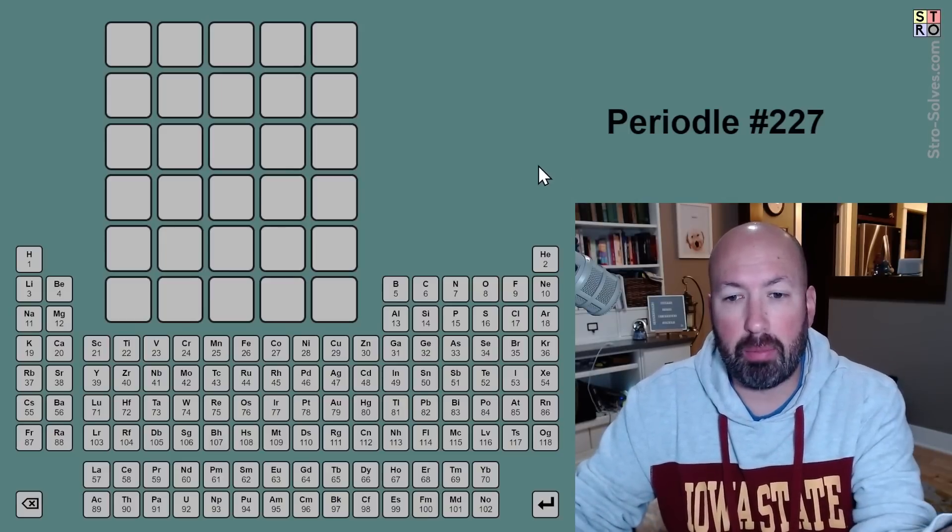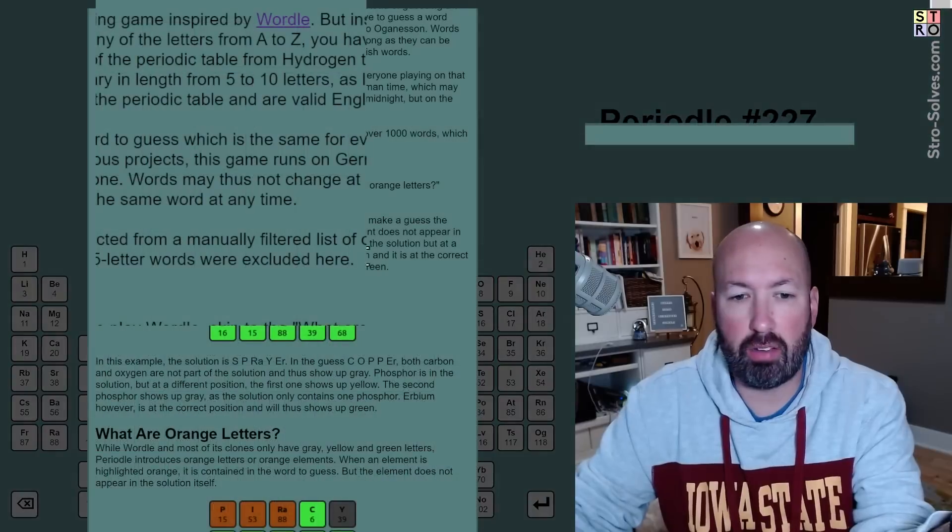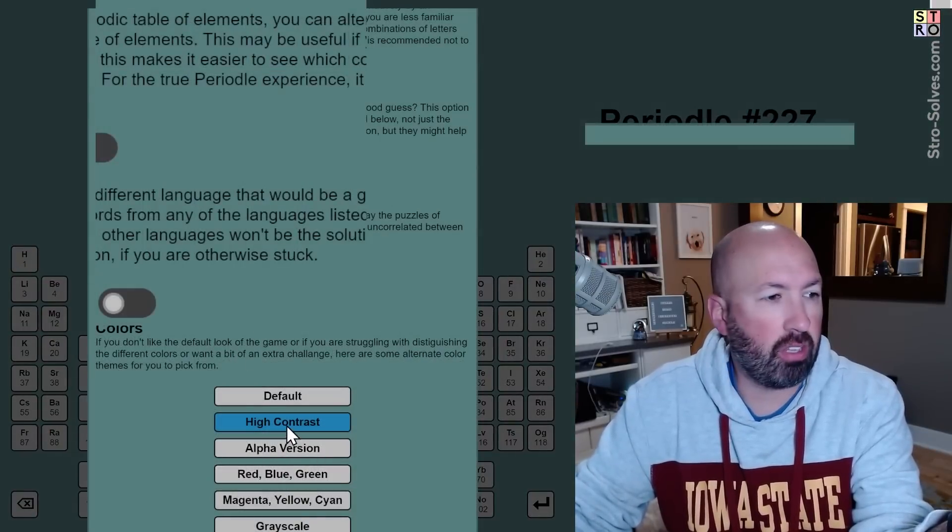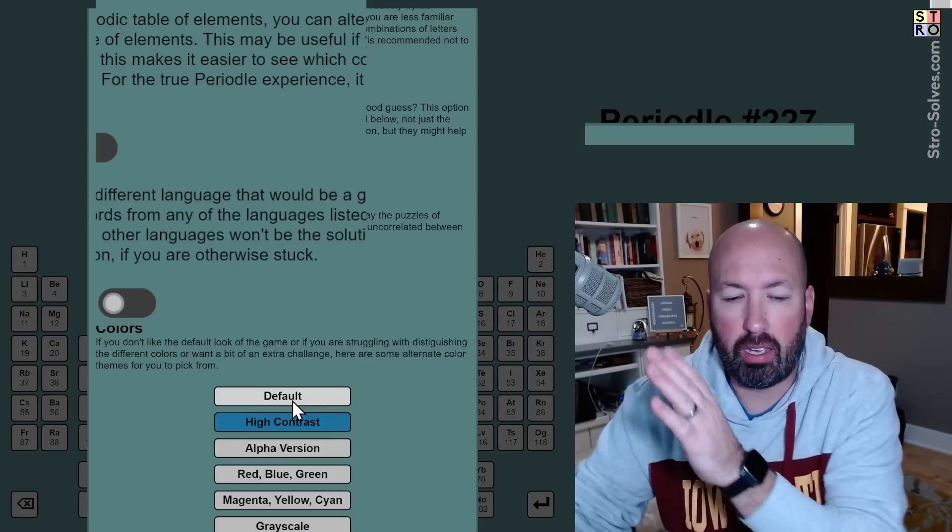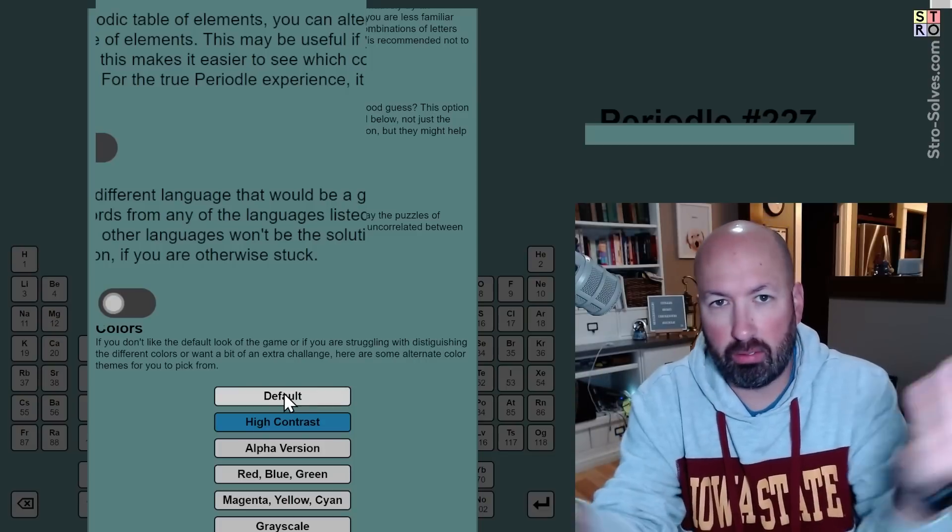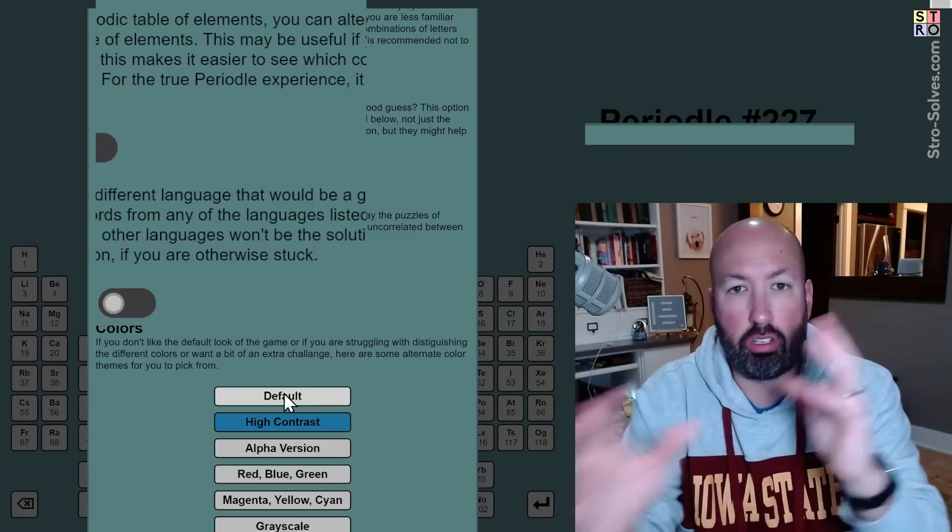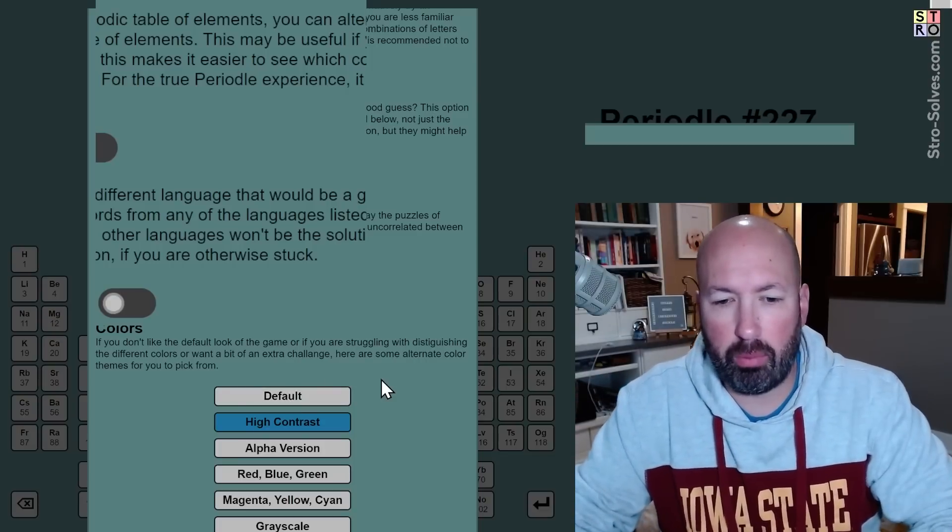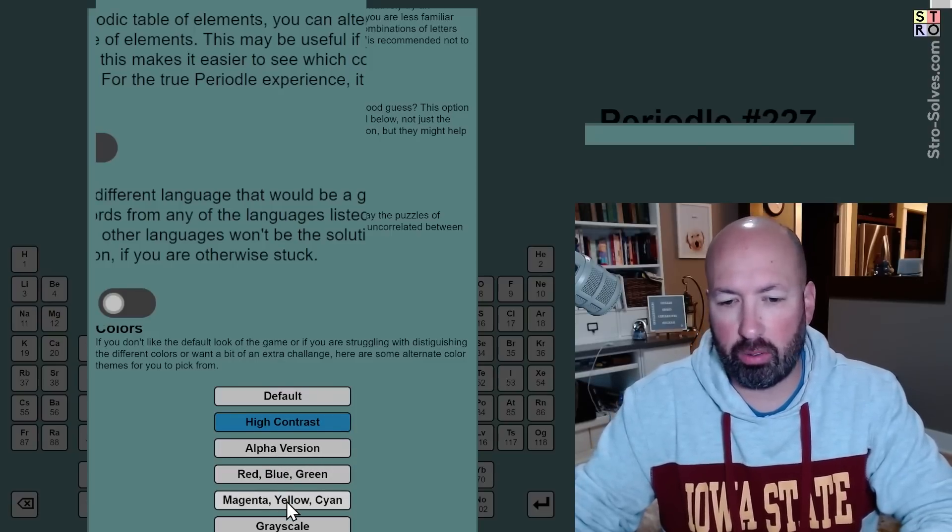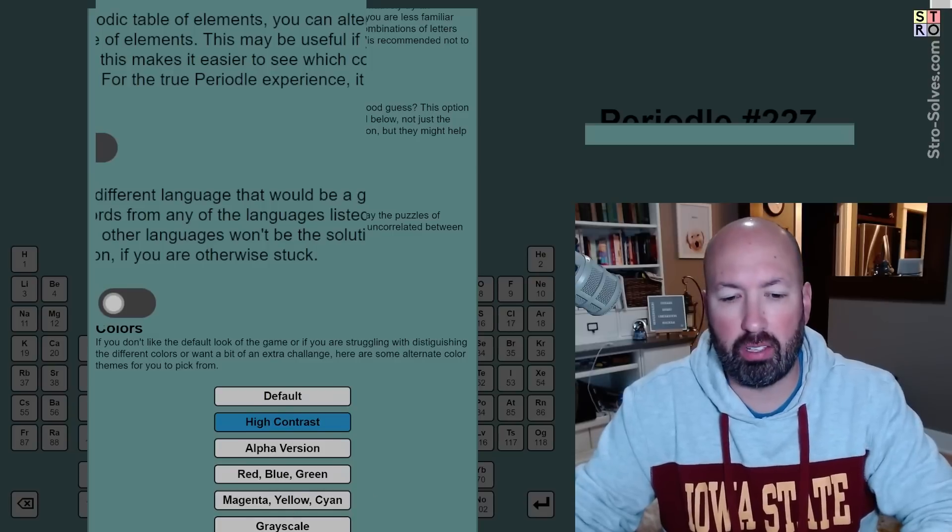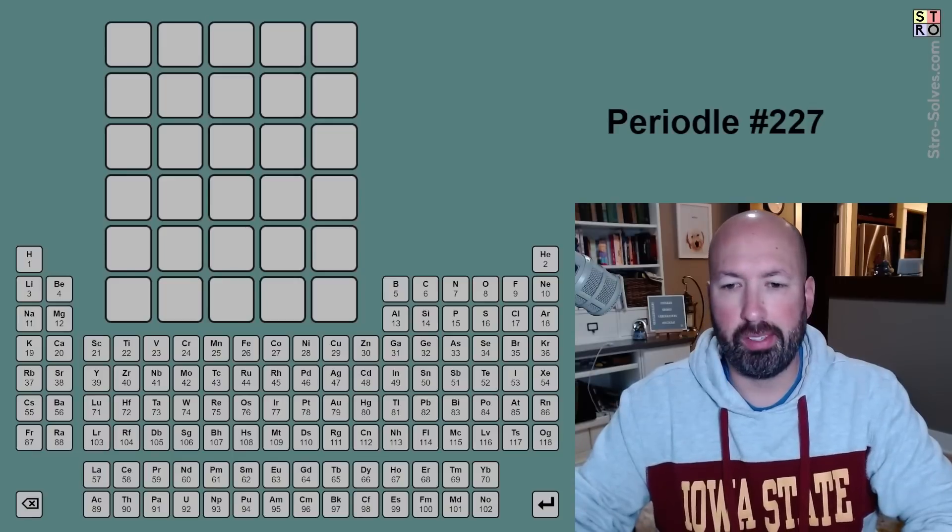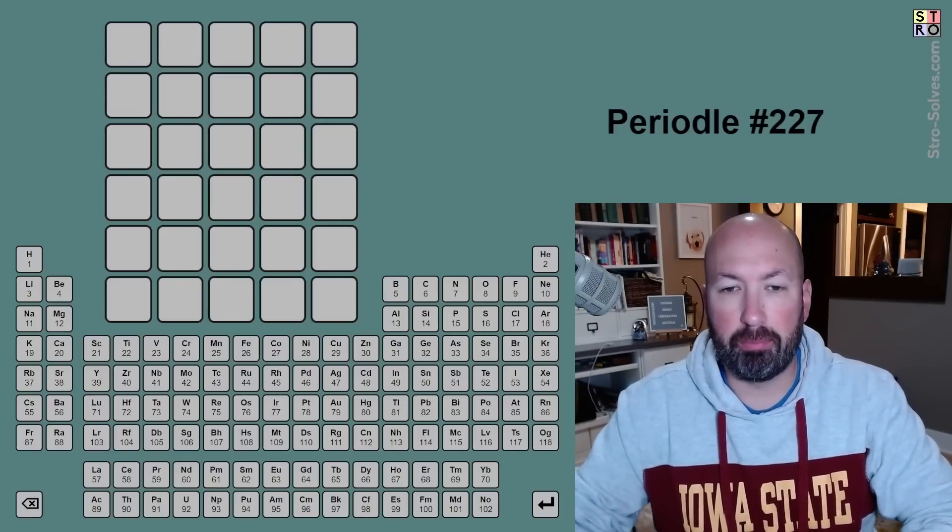And the creator of the game has since added several different color modes that you can choose from. So I've changed to the high contrast version, which is still going to be the same kind of green, yellow, orange, but they're a little bit more contrast. So I can distinguish between them a little bit better, and I think I'll be fine with that. There's some other versions. You can do red, blue, green. You can do magenta, yellow, cyan, gray. But this one will be the most similar to the default, while still allowing me to be able to distinguish them.